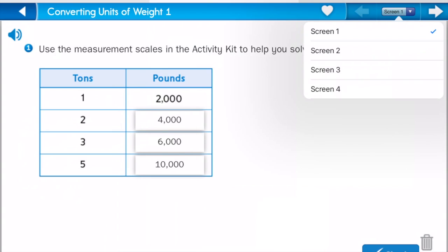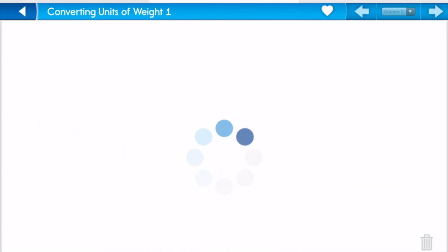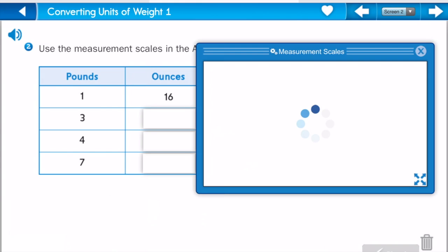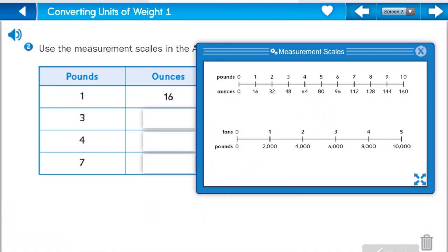Let's try the next one. Let's pull up our activity. We see that 1 pound equals 16 ounces.